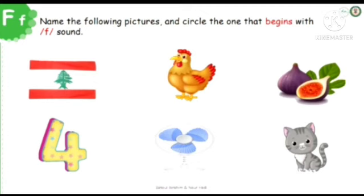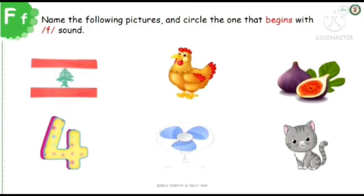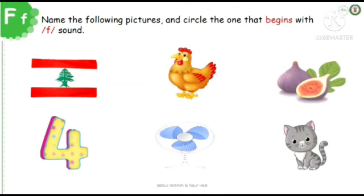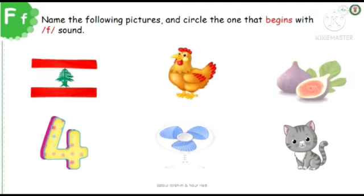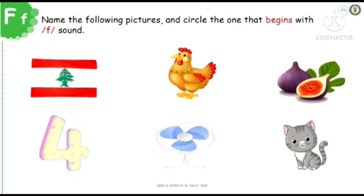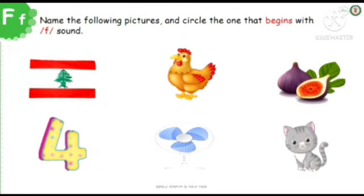So let's get started by naming them. Flag, hen, fig, for, fan, cat. Let's repeat. Flag, flag, hen, fig, for, fan, and cat. That's a great job.